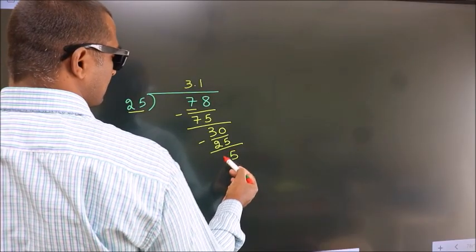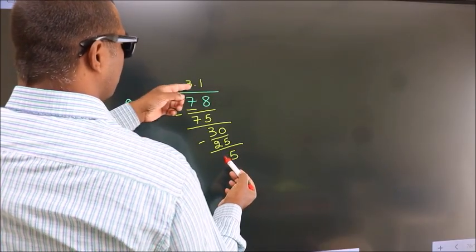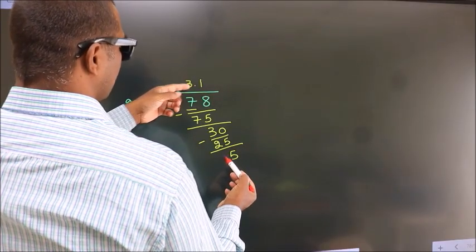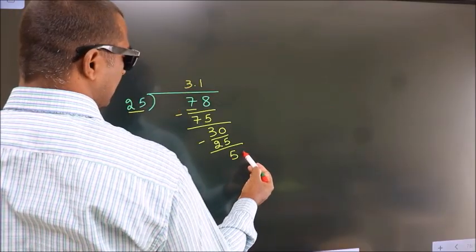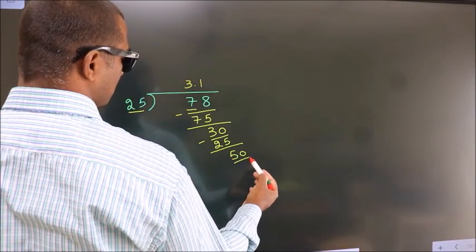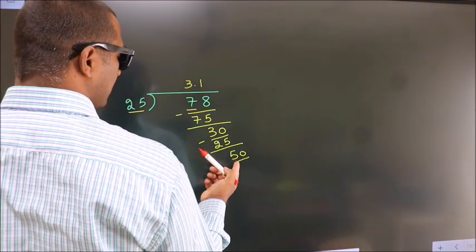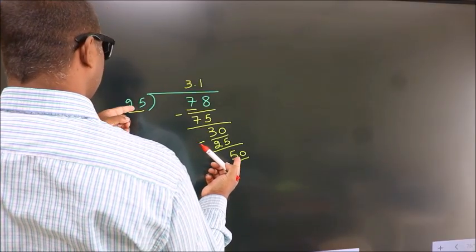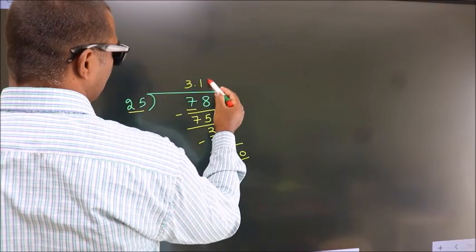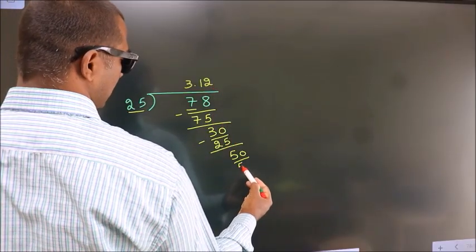After this, we already have the decimal, so directly take 0. So 50. When do we get 50 in the 25 table? 25 twos, 50.